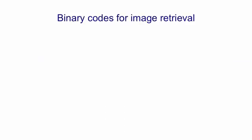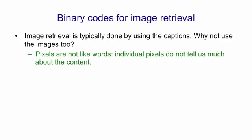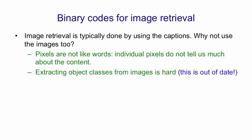Now we're going to look at using binary codes for image retrieval. Image retrieval at present is typically done using the captions. But why not use the images too? They obviously contain a lot more information than the captions. The basic problem is that pixels are not like words — individual pixels don't tell us much about the content of an image. Obviously, if we could recognize the objects in the images, then we'd have things that were much more like words.